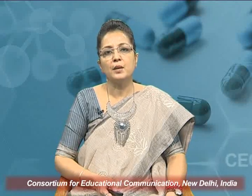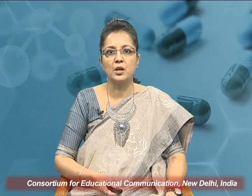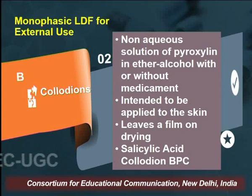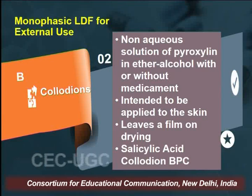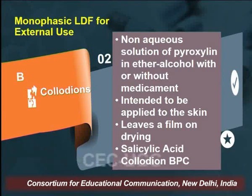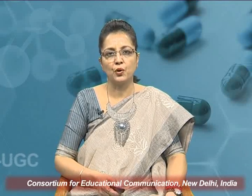The second type under monophasic liquid dosage forms for external use are collodions. Collodions are non-aqueous solutions of pyroxilin in an ether-alcohol base, with or without a medicament. They are intended to be applied to the skin and leave a film on drying. Example: salicylic acid collodion, official in the British Pharmaceutical Codex.